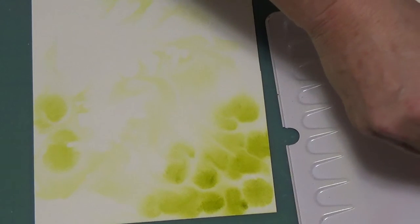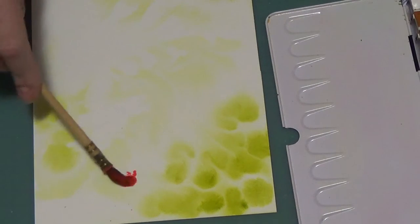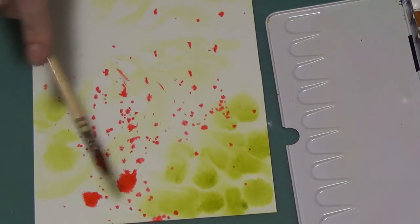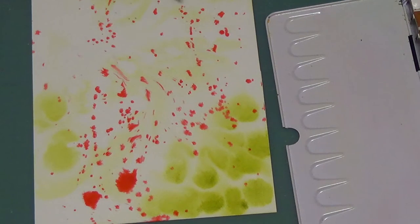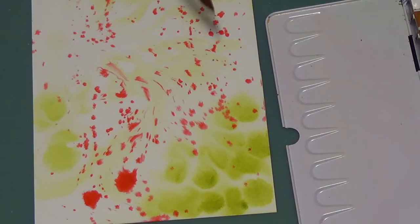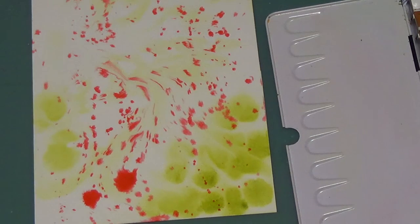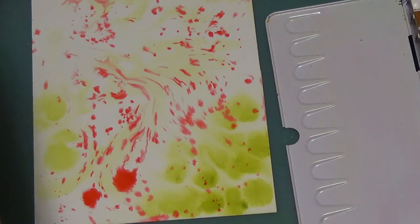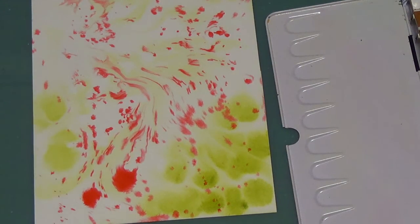Now we are going to use this one here, a red scarlet. This is Winsor & Newton. We're going to touch that to the paper too. We're just going to start hitting the edge of our brush and let those dots take over. It can go on top of your green, but not too much, just a little bit, because they're complementary colors.